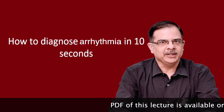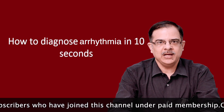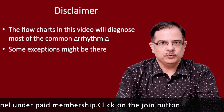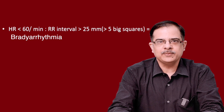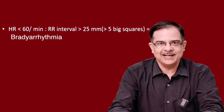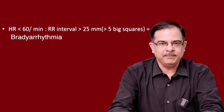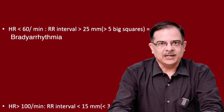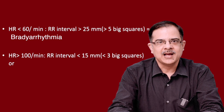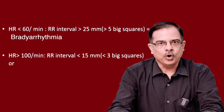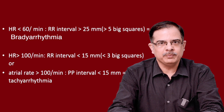Diagnosing cardiac arrhythmia on ECG in 10 seconds might seem an impossible task, but let's simplify this topic with the help of flowcharts. These flowcharts will diagnose cardiac arrhythmia in most cases, though there can be some exceptions. There are two types: bradyarrhythmia where heart rate is less than 60 (RR interval more than 25 mm or 5 big squares), and tachyarrhythmia where ventricular rate is more than 100 (RR interval less than 15 mm) or atrial rate more than 100 (PP interval less than 15 mm).